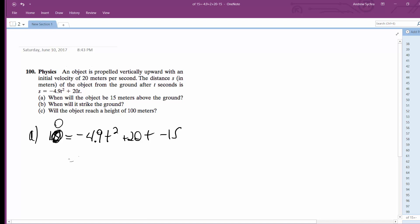Solving for T gives us, when I solve for it, opposite of B. So negative 20 plus or minus the square root of B squared, which is 400, minus 4 times AC, which is negative 15, all over 2A.